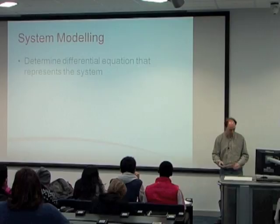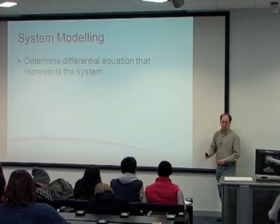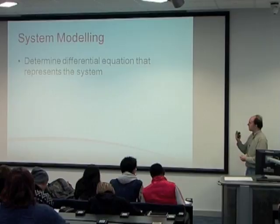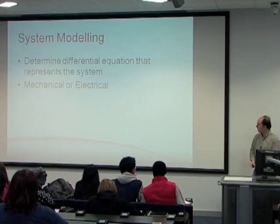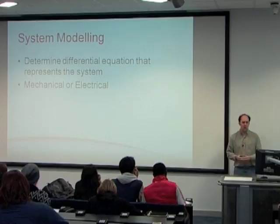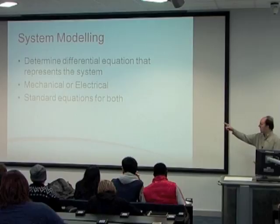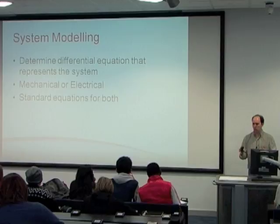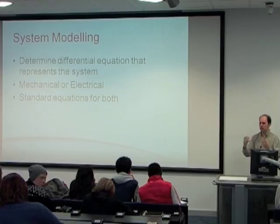First step: system modelling. As we saw last week, the way to model a system is to determine the differential equation that relates to that system and represents how it changes with respect to time. In this course, we're going to predominantly be talking about mechanical or electrical systems. There are standard equations for both of these, and the equations for them are essentially the same — they don't change that much. Because the equations are the same, it doesn't matter what type of system you're dealing with. The mathematics behind it is exactly the same.